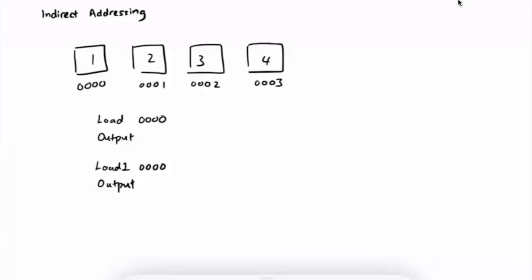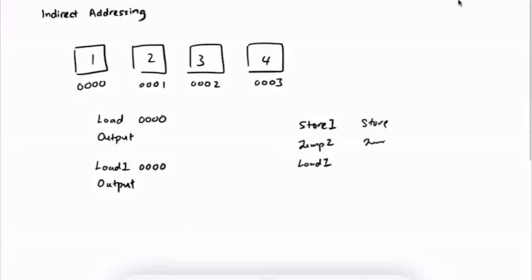In this video, I'm going to talk about subroutine and indirect addressing. Subroutine is actually the way we do loops in MARIE. And to understand subroutine, you need to understand indirect addressing. You must have seen some instructions like storeI, jumpI, or loadI. The difference between store, jump, or load and the one with I is that the I stands for indirect addressing.